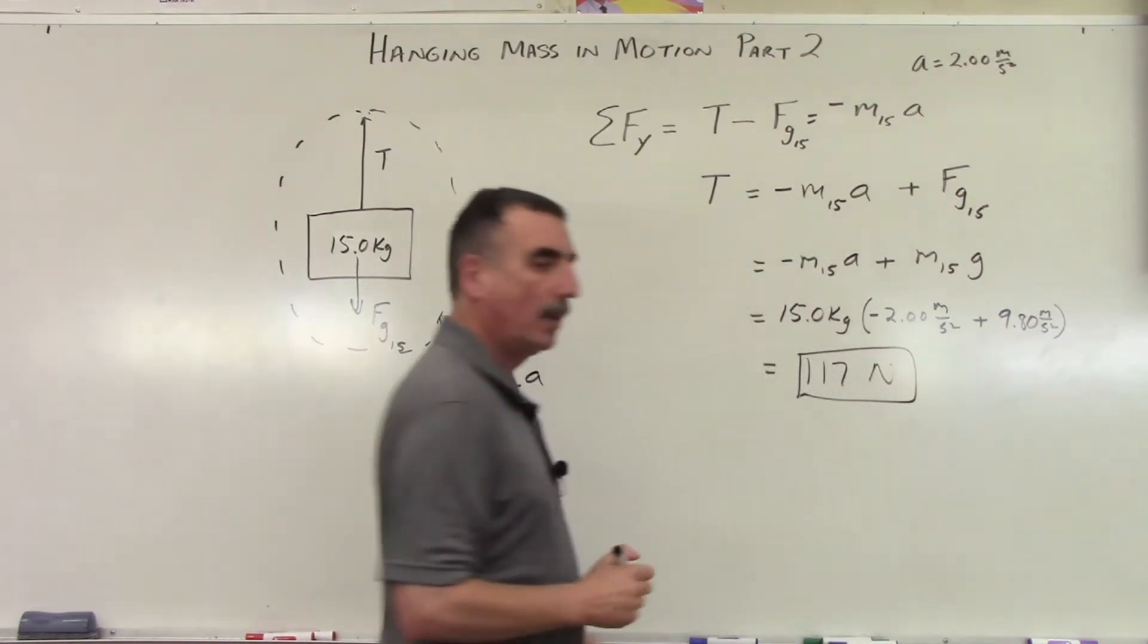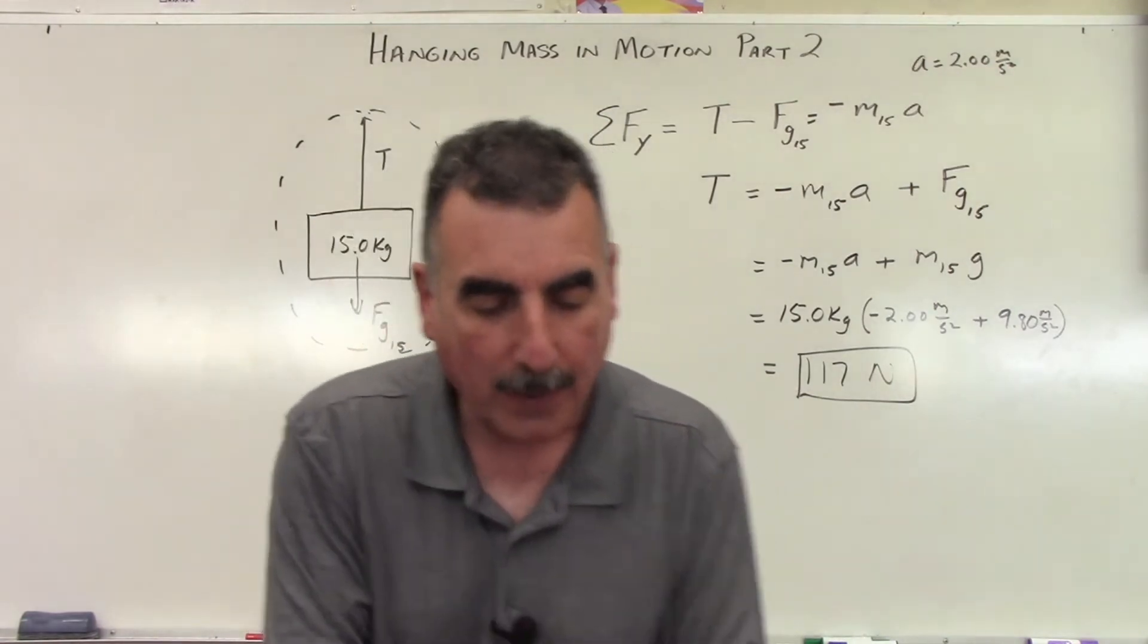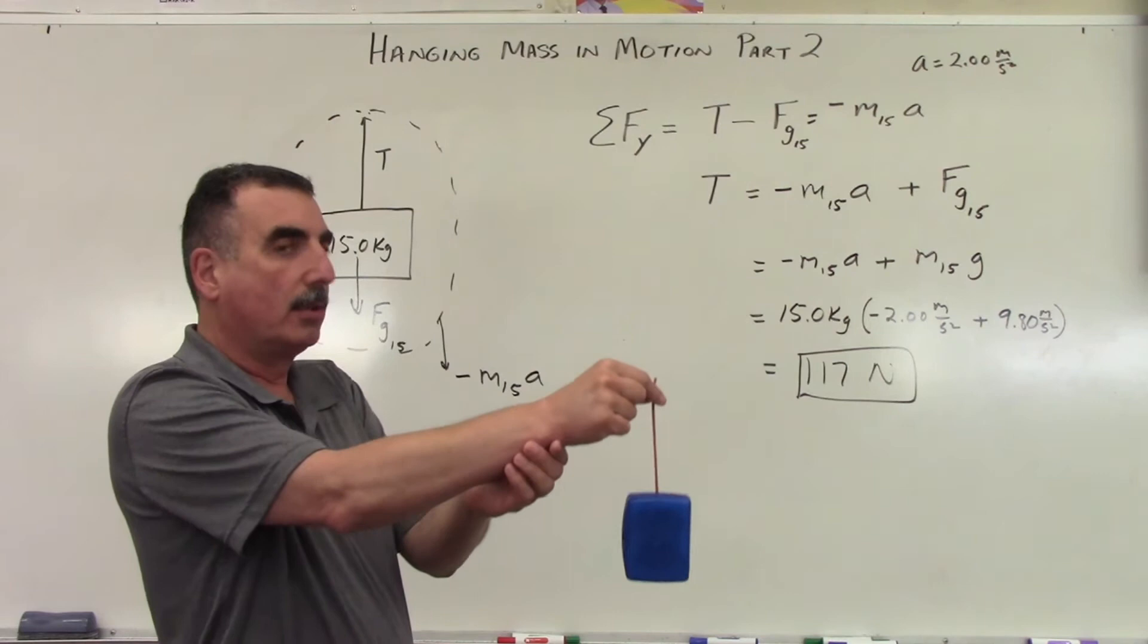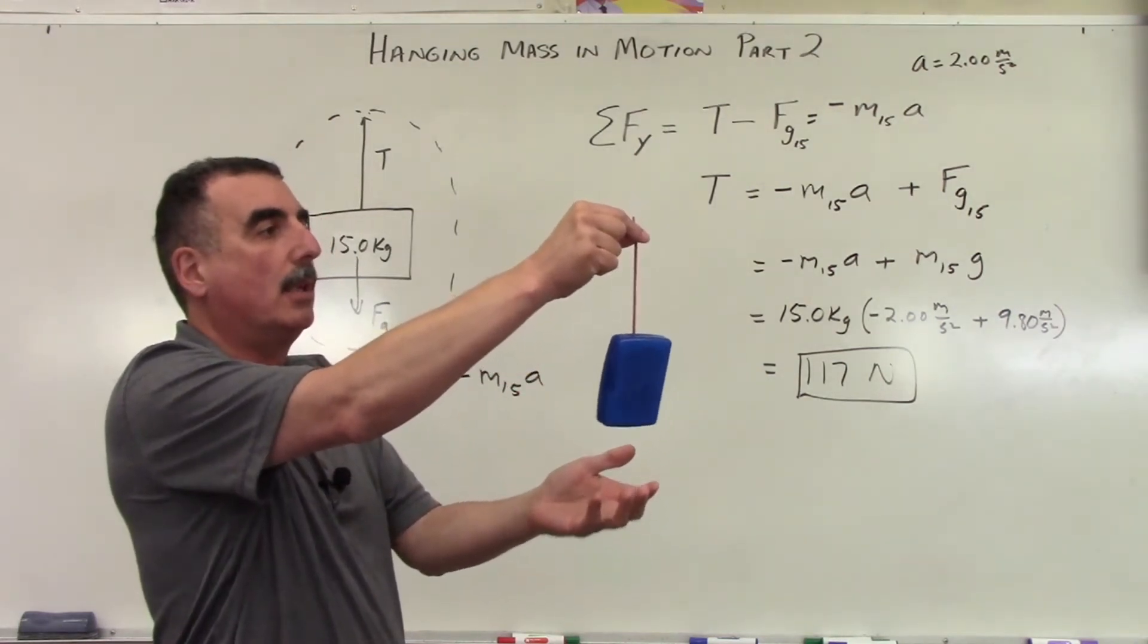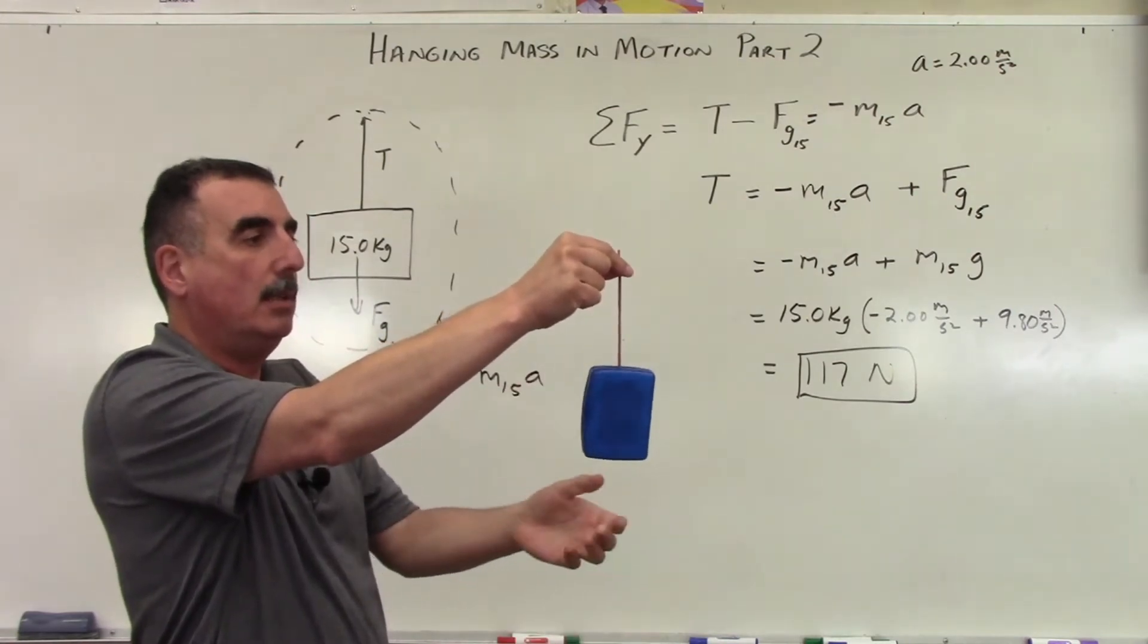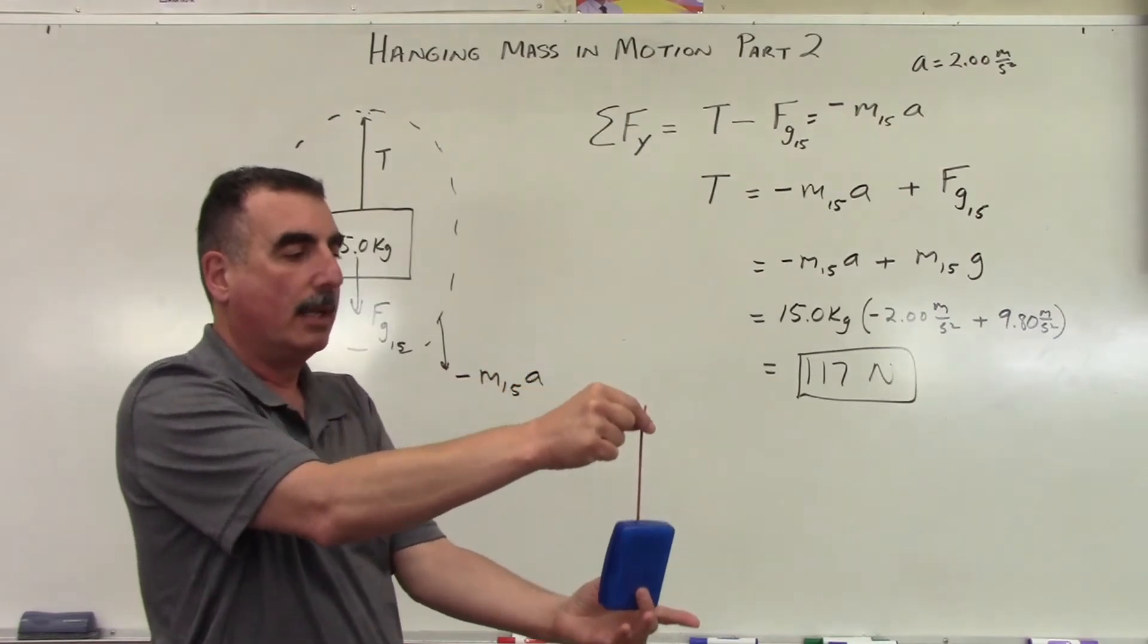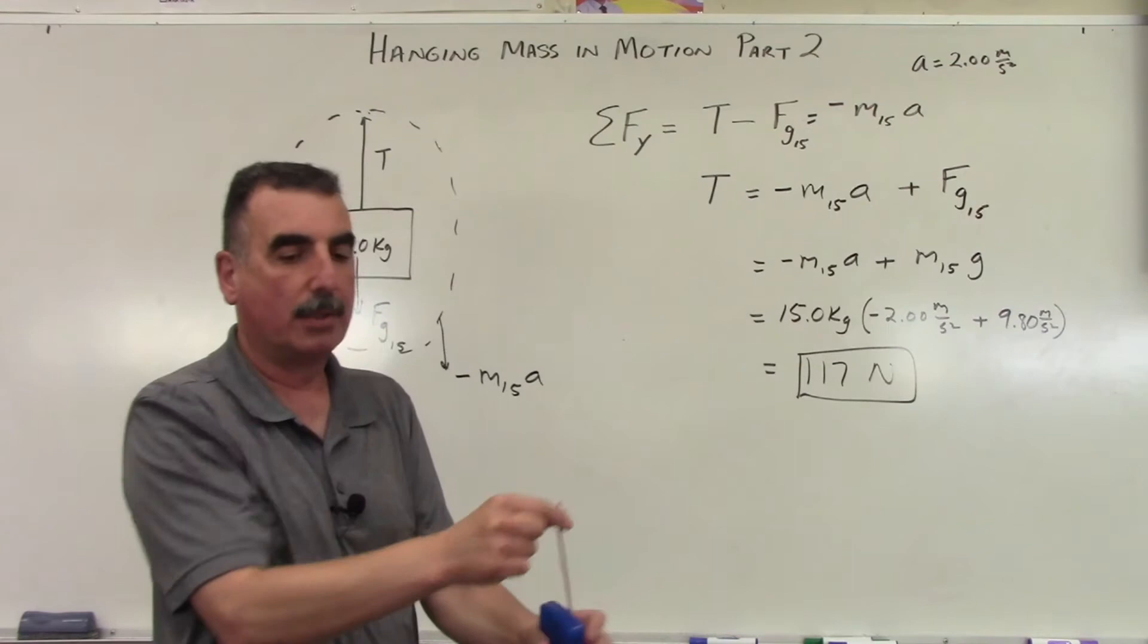So that seems kind of strange. Well, if you think about this, you're going to exert a greater force because you're pulling up on the object and gravity is pulling down. Now on the downward side, you get a little bit of an assist. You're going in the same direction as the force of gravity. So it's going to be a little less tension on the cord.